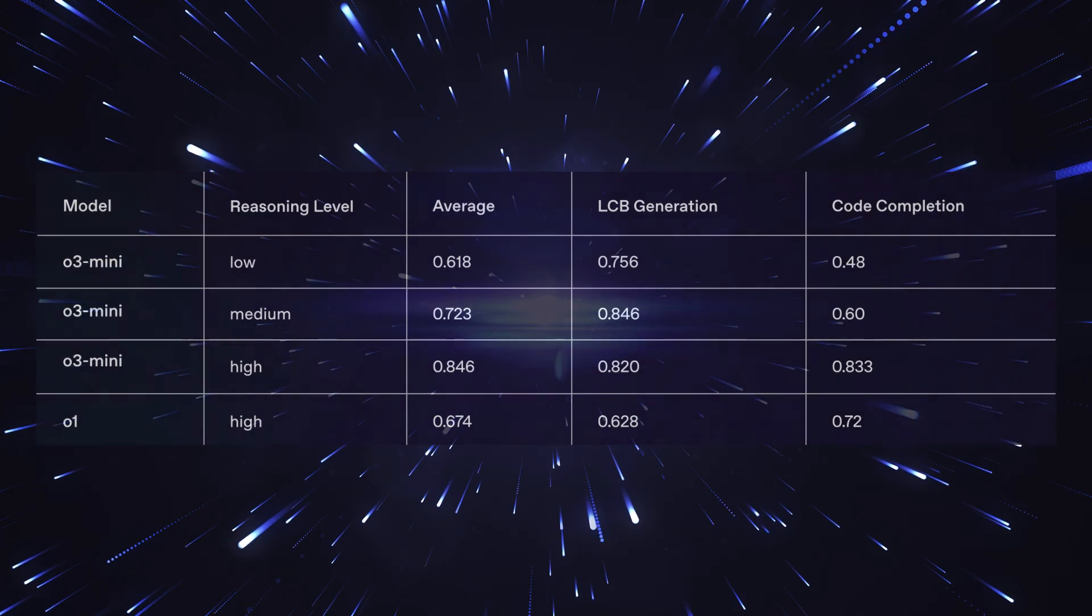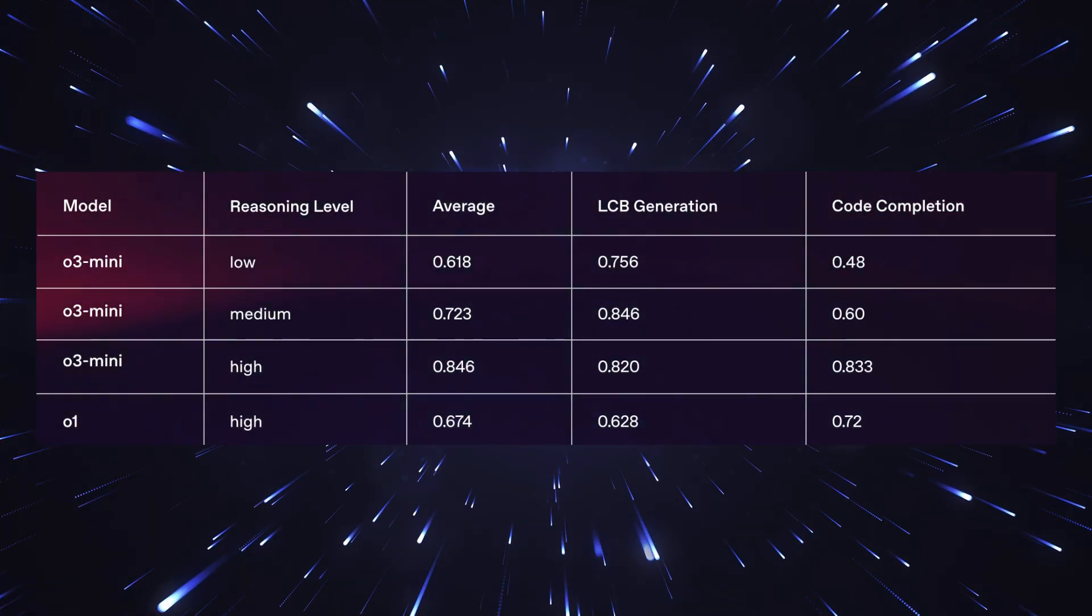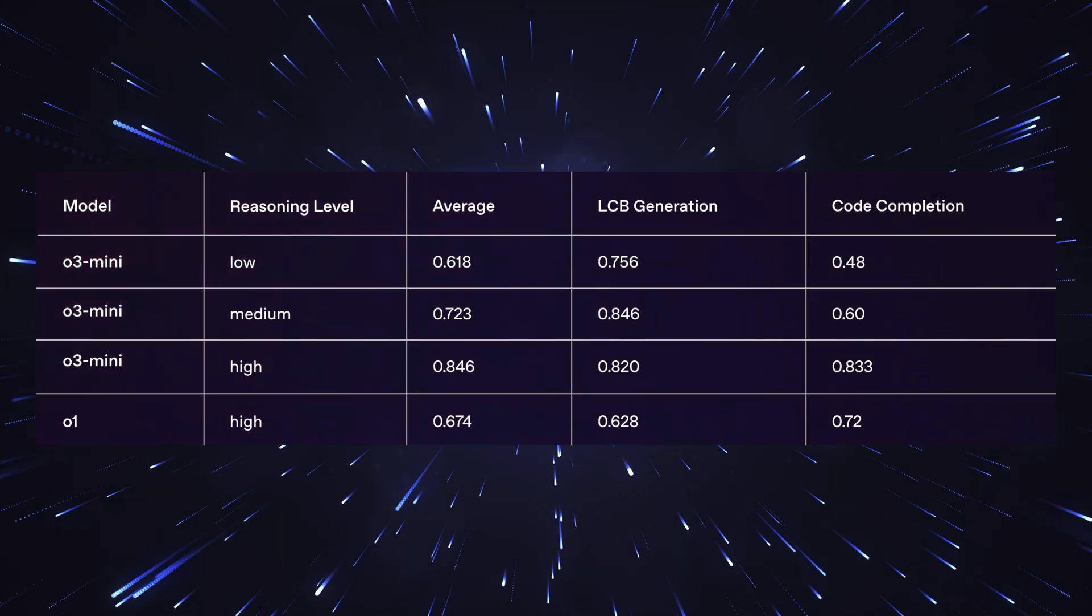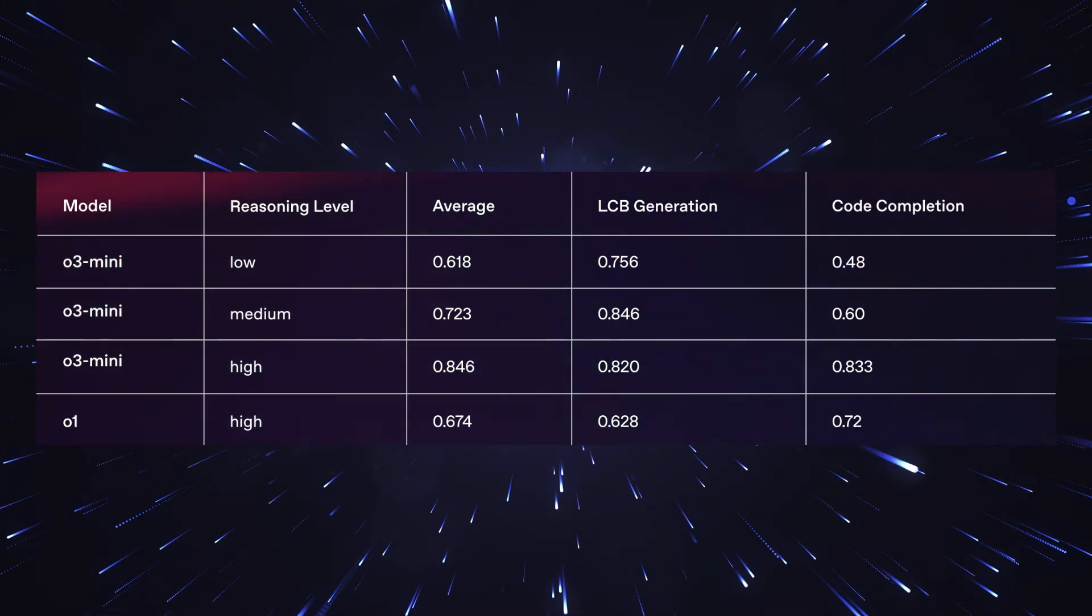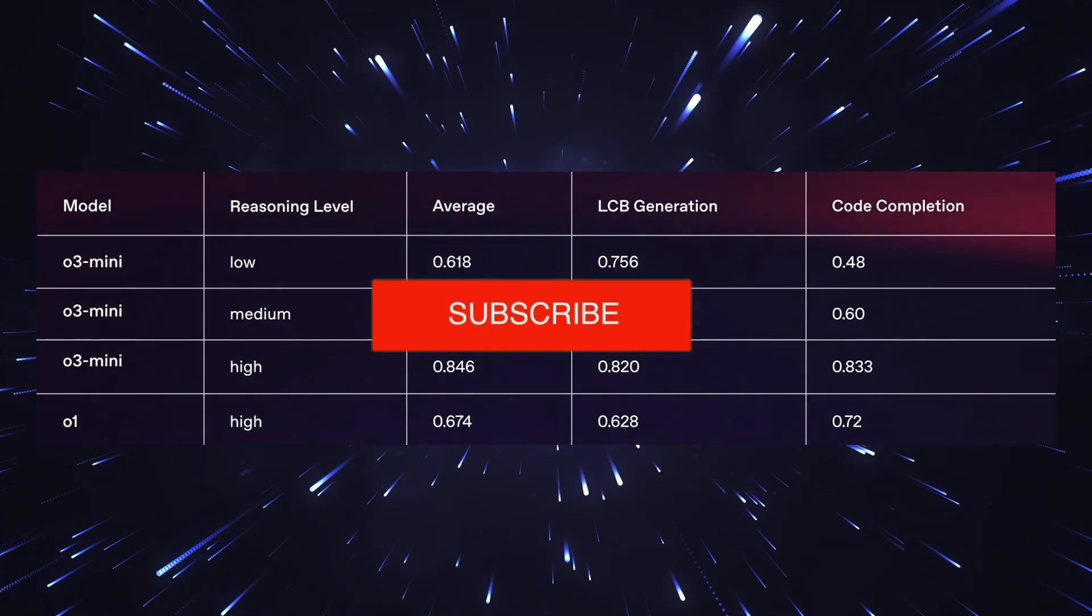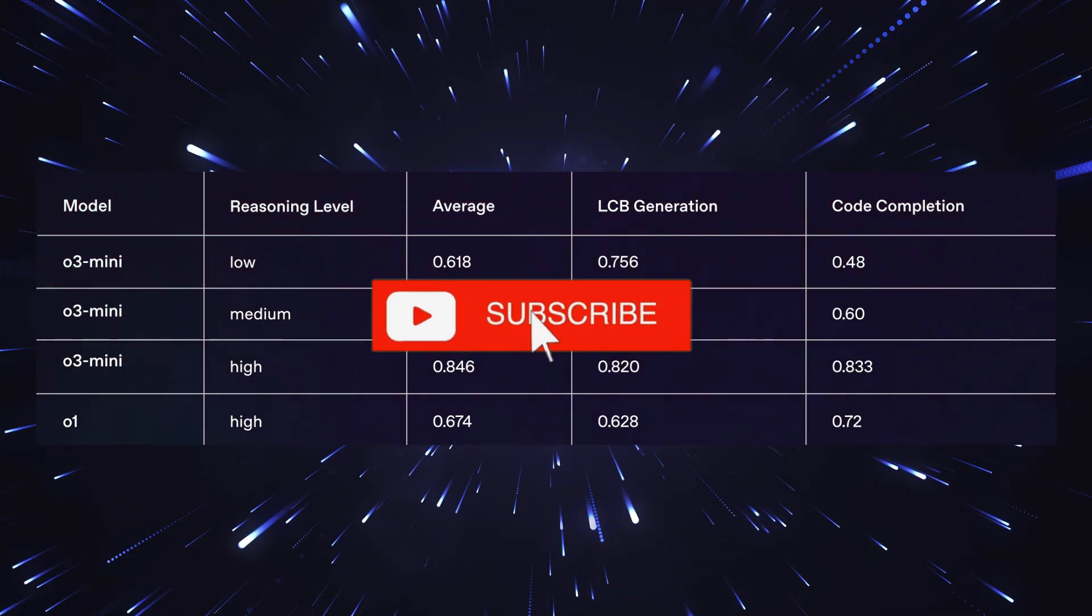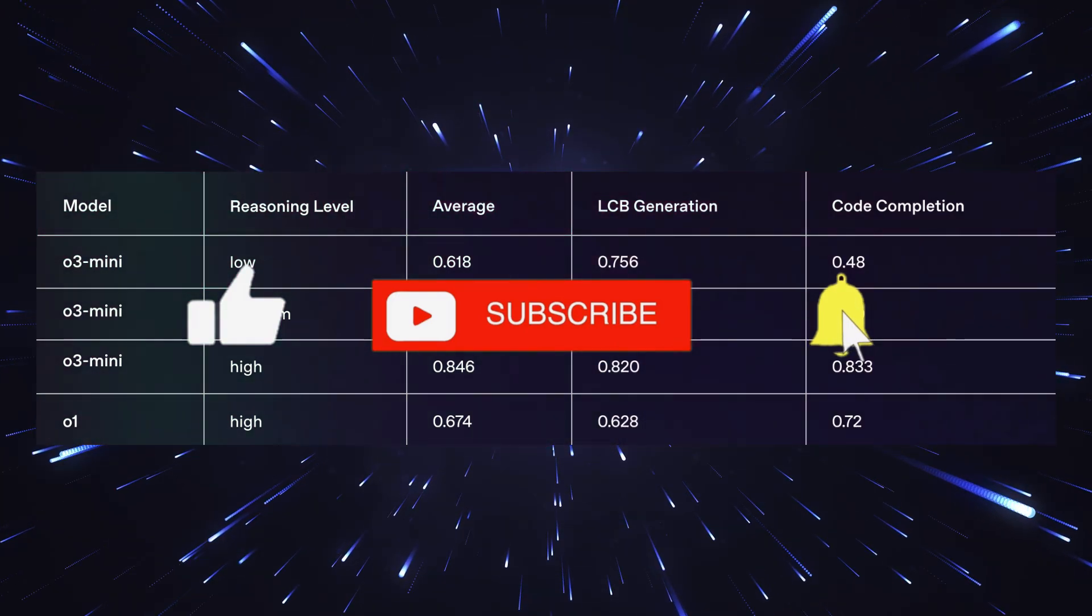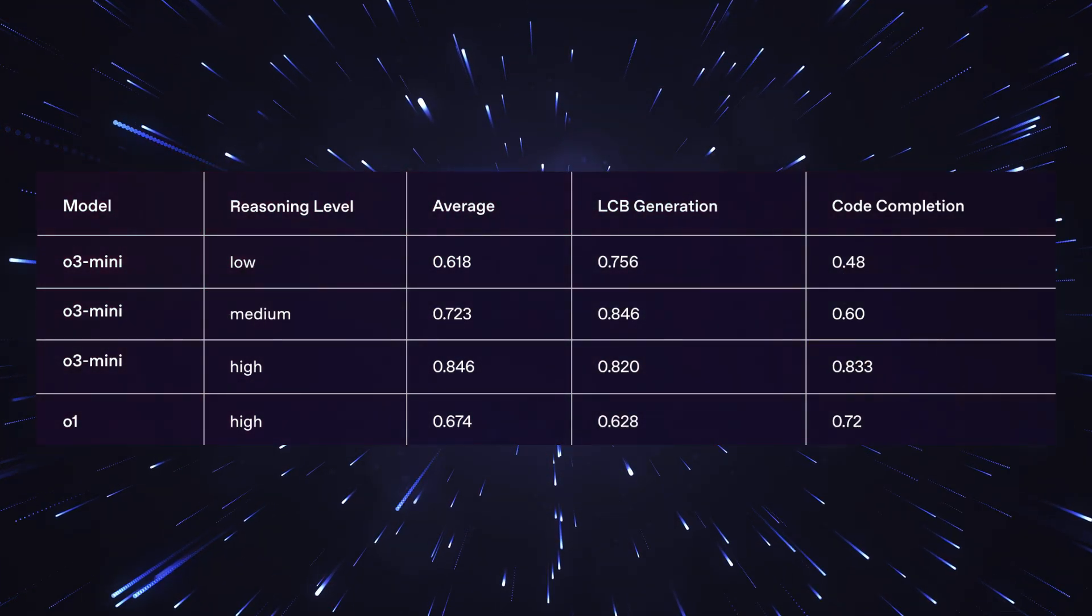What's particularly impressive is that O3 Mini not only creates the basic game code, but also immediately develops a complete training system for the AI. The system starts with random movements, but through continuous training and a sophisticated reward function, it learns quickly. After about 500 training episodes, the AI achieves impressive results and can play the game at a level far beyond what a simple algorithm could achieve.